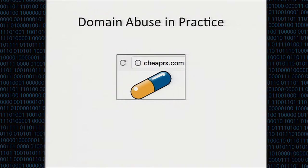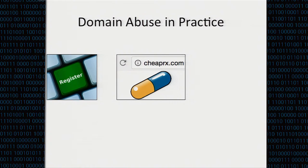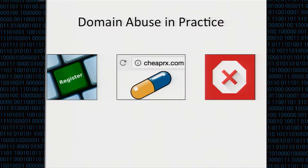I want to start by making an observation about what some of us think of as domain abuse today. Perhaps somebody takes a domain — for example, cheaprx.com — and uses it to do something that doesn't add value to internet users, like selling counterfeit pharmaceutical goods. The story begins when the domain is registered and hopefully ends when the domain is detected, giving us a three-part story: registration, use, and detection.